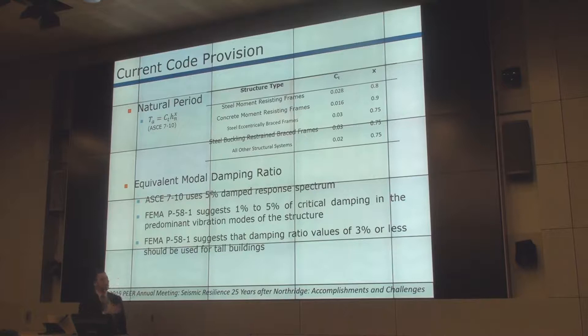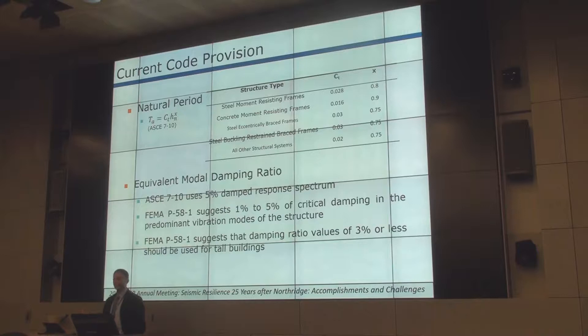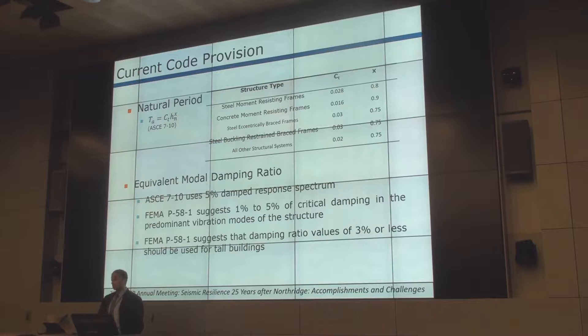This slide shows what ASCE 7 has in terms of damping and period. There is an equation coming from the work that Chopra and Goel did in the late 1990s. Given the lateral force-resisting system, you can come up with an estimate of period — it is a low bar, but that's what we have to work with. In terms of damping, if you're using spectral analysis, 5% is the way to go. If you are using performance-based design guidelines, which may have building models incorporating nonlinear action, you have to use a lesser value for equivalent damping.